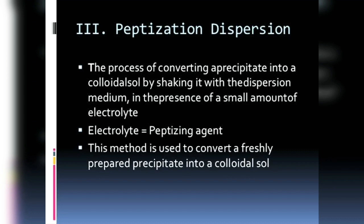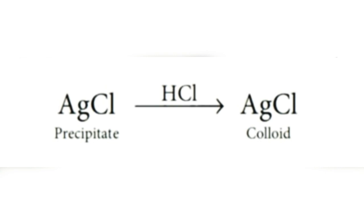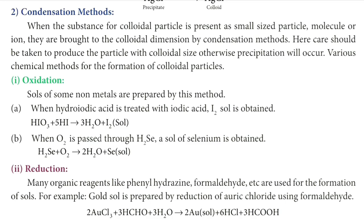The next method is peptization. In peptization, a precipitate can be converted back into a colloidal solution by adding some electrolyte. When the precipitate is treated with an electrolyte, it is converted into a colloidal solution. For example, silver chloride when precipitated can have hydrochloric acid added to it to convert it back into a colloidal solution. That hydrochloric acid is called a dispersing agent or peptizing agent.